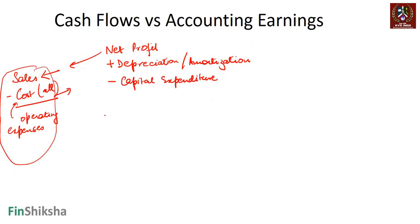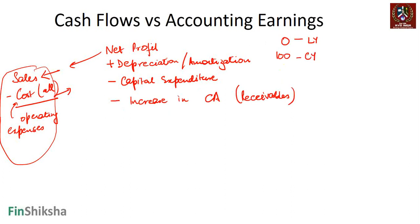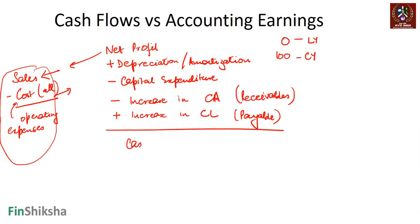In net profit, we assume all sales have been received and all costs paid. If that has not happened, we adjust for working capital — specifically, minus any increase in current assets such as receivables. For instance, if receivables were zero last year and 100 this year, that 100 has not been received and must be accounted for. Plus any increase in current liabilities — money not yet paid stays with you as cash. This broadly gives us our cash flows.